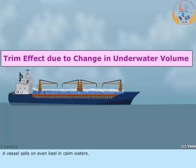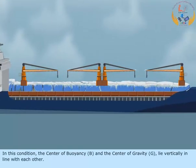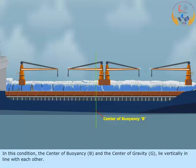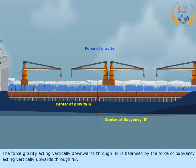A vessel sails on even keel in calm waters. In this condition, the center of buoyancy B and the center of gravity G lie vertically in line with each other. The force of gravity acting vertically downwards through G is balanced by the force of buoyancy acting vertically upwards through B.